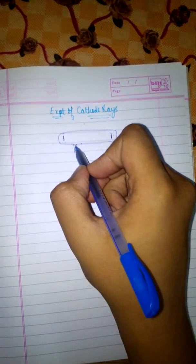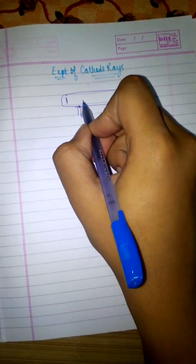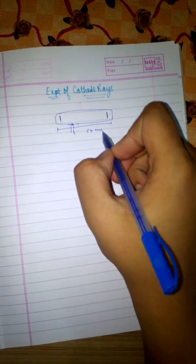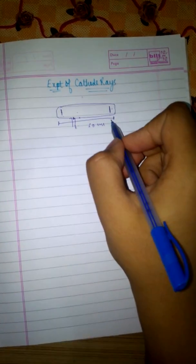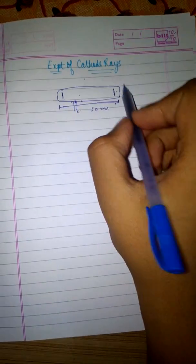This discharge tube has a small side opening with a small tube to reduce the pressure of the discharge tube. The discharge tube is approximately 60 centimeters long and 5 centimeters in diameter.